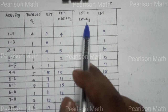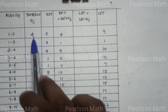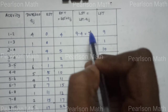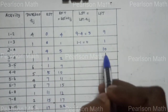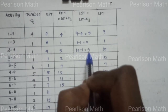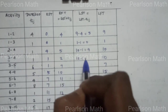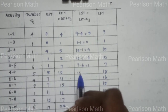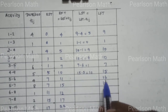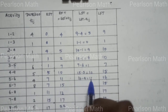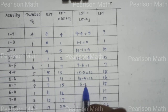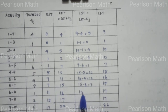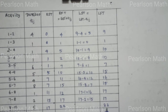LST equals LFT minus Tij. Calculations: 9 minus 4 equal to 5; 1 minus 1 equal to 0; 10 minus 1 equal to 9; 10 minus 1 equal to 9; 7 minus 6 equal to 1; 15 minus 5 equal to 10; 16 minus 4 equal to 12; 15 minus 8 equal to 7; 17 minus 1 equal to 16; 17 minus 2 equal to 15; 22 minus 5 equal to 17.